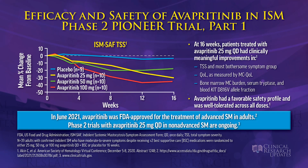The new era for the treatment of systemic mastocytosis is the tyrosine kinase inhibitors — one of which has already been approved for advanced disease. Any tyrosine kinase inhibitor that would address mutated KIT would be able to decrease the mast cell burden and the disease.